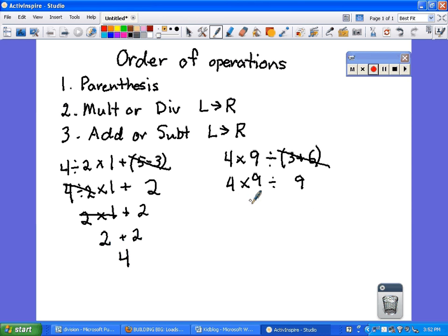Starting from left to right, multiplication is what we'll do first. So 4 times 9 is 36. Done with that, so we bring down the division symbol and 9. And 36 divided by 9 is 4.